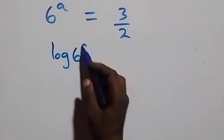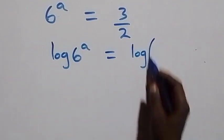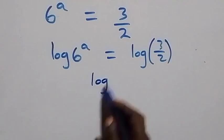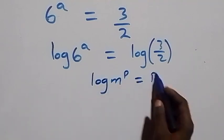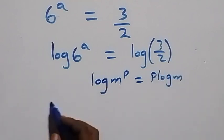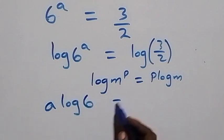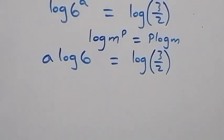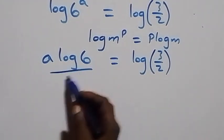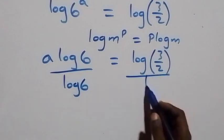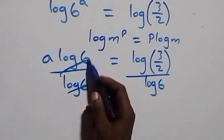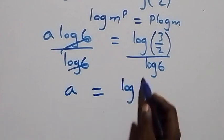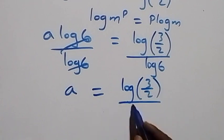Then here we take the log on both sides, so we have log of 6 raised to power a equals log of 3 over 2. From here we divide both sides by log 6. Log 6 cancels each other, and we have a equals log(3/2) over log 6.